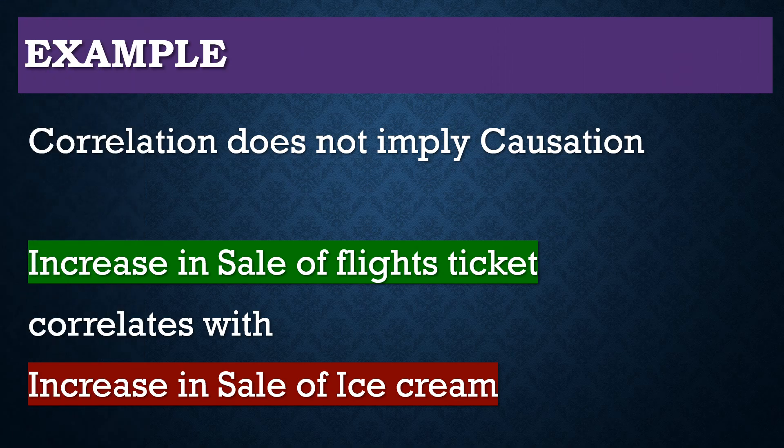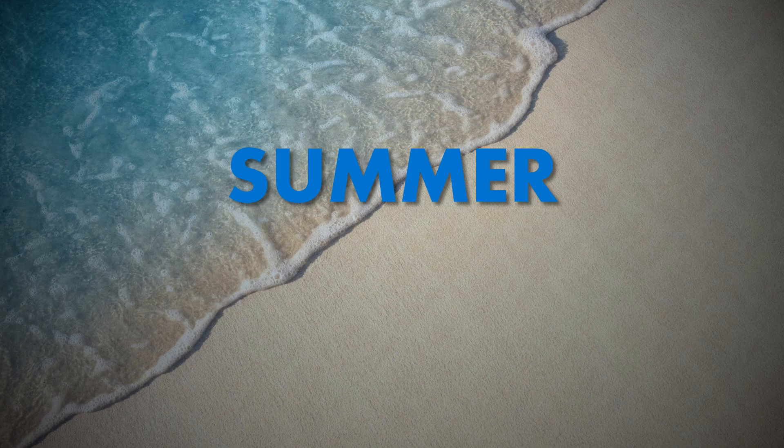To show that correlation does not always imply causation: an increase in the sale of flight tickets correlates with an increase in the sale of ice cream. These two variables may appear related, but there is a third variable — summer. In summer, people buy more flight tickets due to summer vacations, and they eat more ice cream due to the summer weather. So it is not necessary that A causes B or B causes A. There is a third variable, C — summer — which causes both A and B, even if A and B are highly or perfectly correlated.